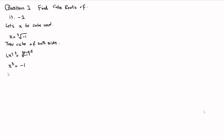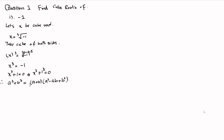Taking minus 1 to the left hand side, we have x cubed plus 1 is equal to 0. Now according to the formula: a cubed plus b cubed equals a plus b, times a squared minus ab plus b squared. We can write the above equation as x cubed plus 1 cubed equals 0, and we will use this formula.